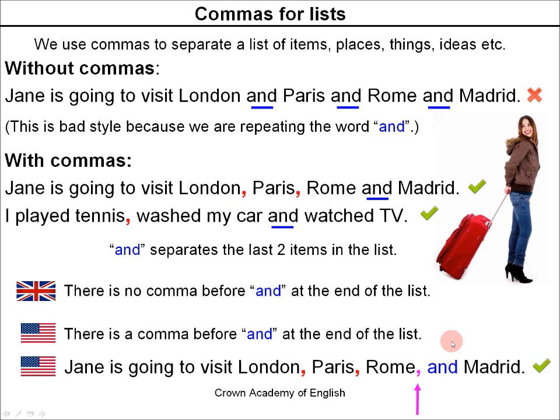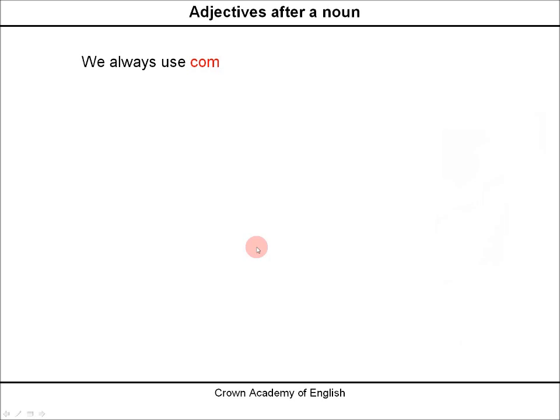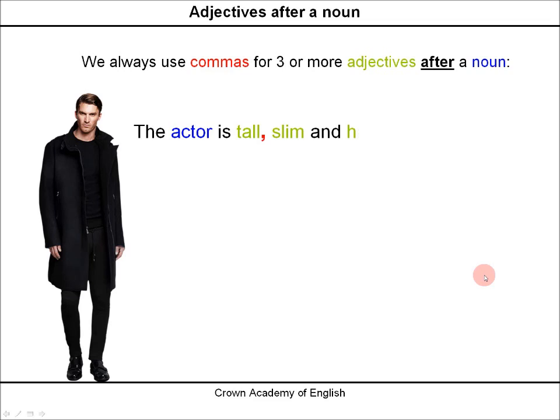Adjectives after a noun. We always use commas for three or more adjectives after a noun. Example: 'The actor is tall, slim and handsome.' These are three adjectives and we treat them exactly like a list — the same rules apply. We have a comma here, we have the word AND for the last two items, and there's no comma before AND.